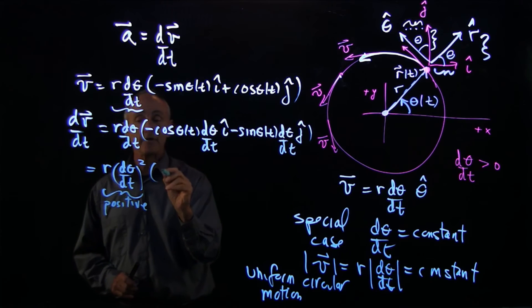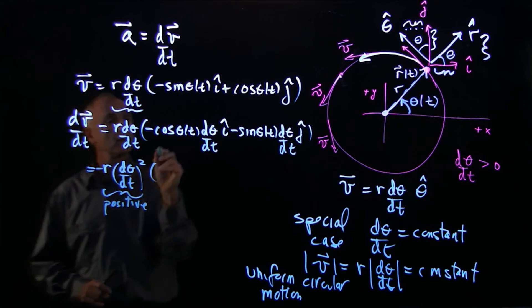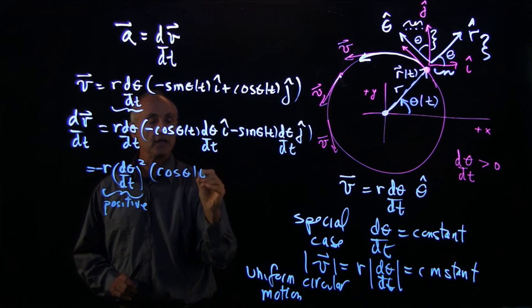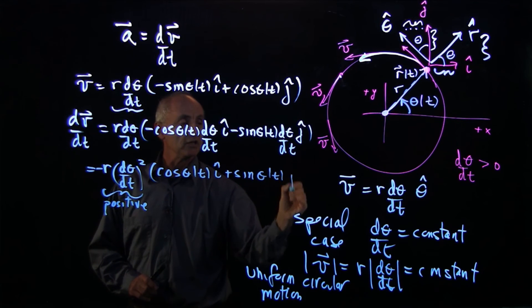And inside, I'm also going to pull the minus sign out. And I have cosine theta of t i hat plus sine theta of t j hat.